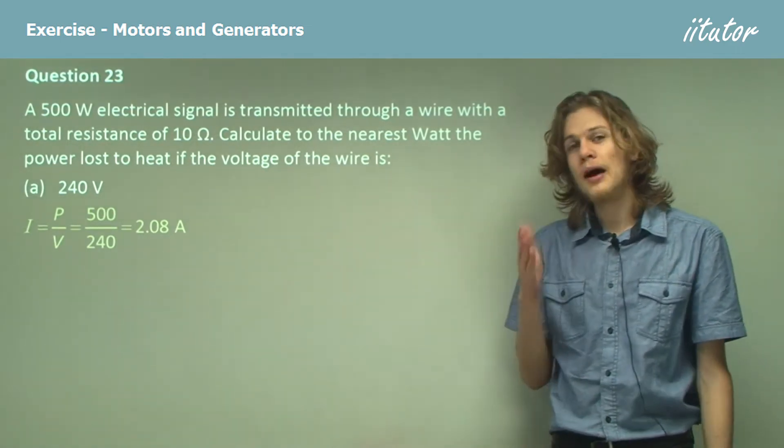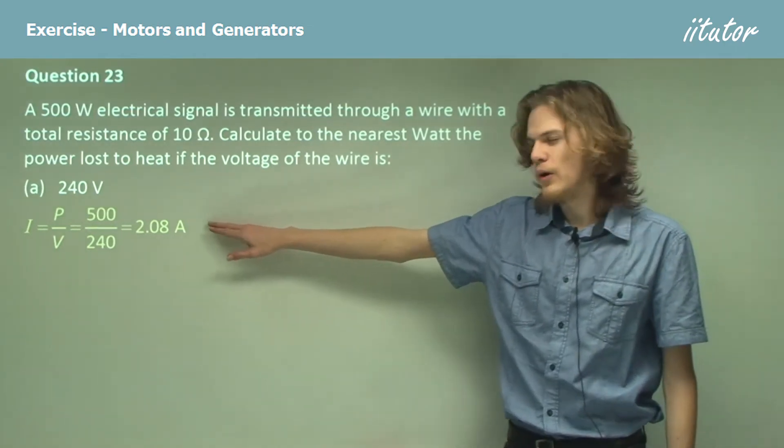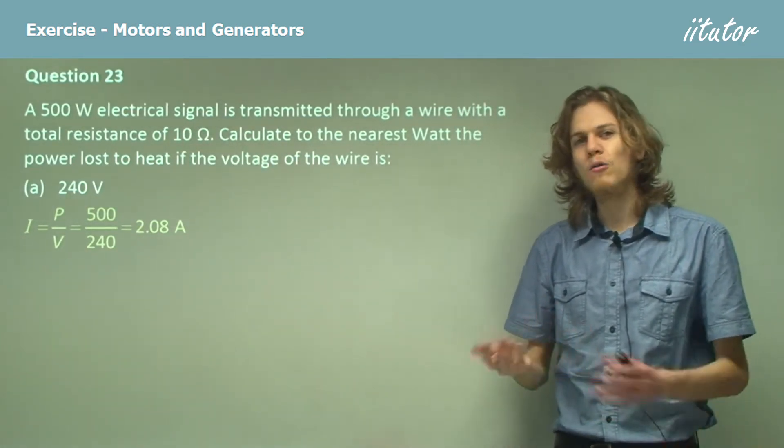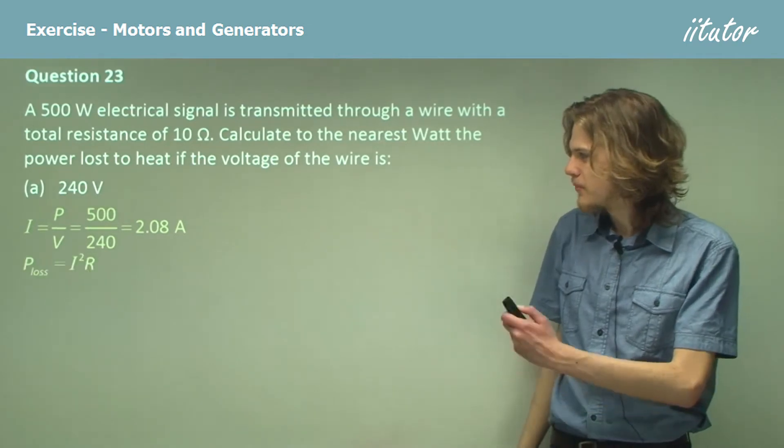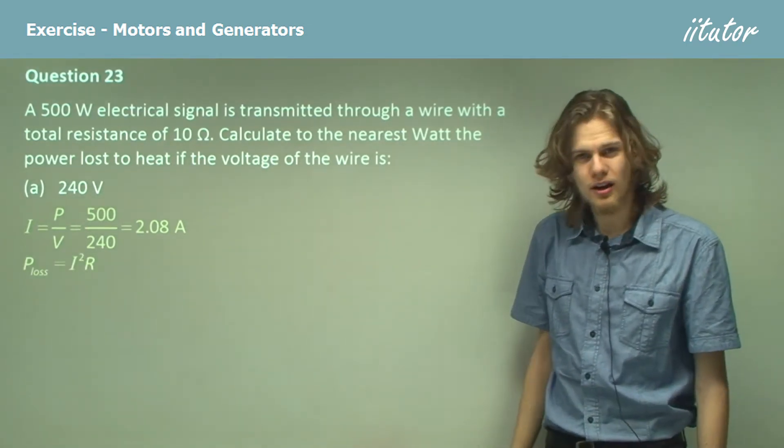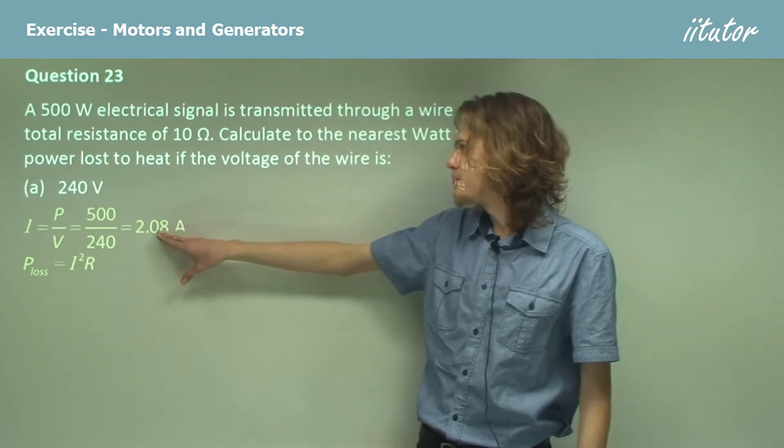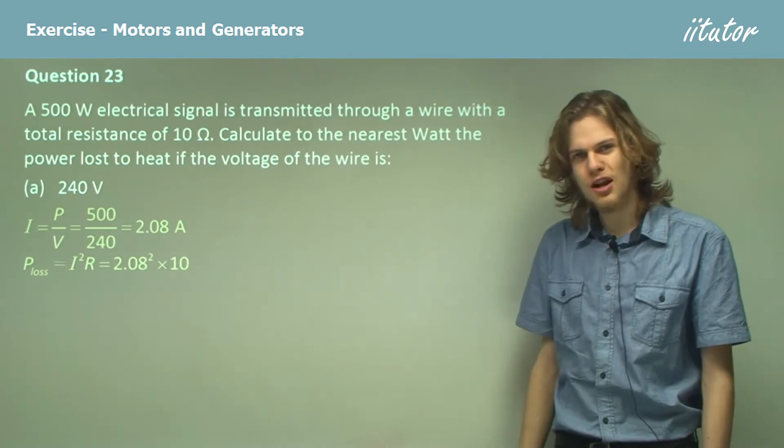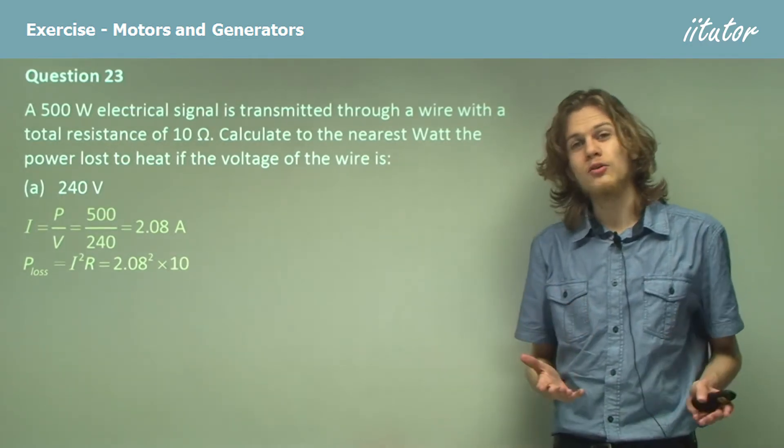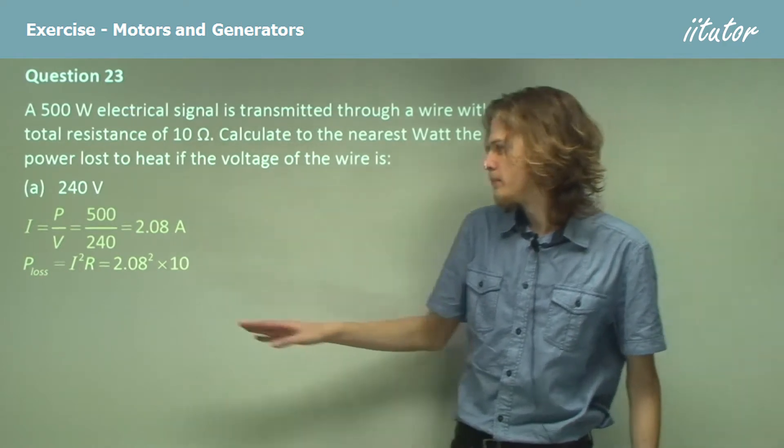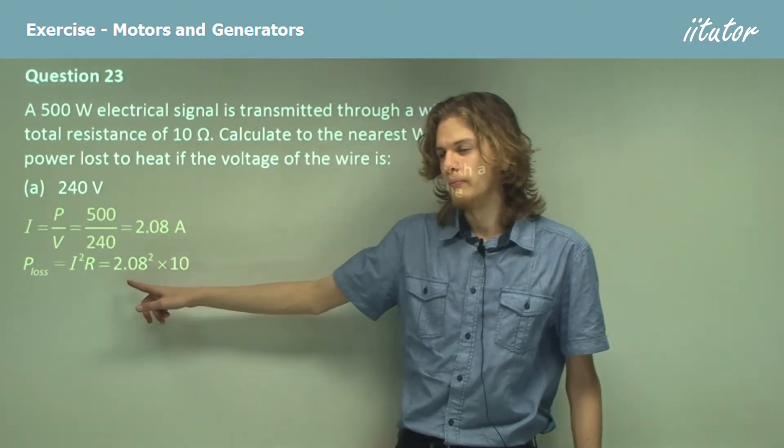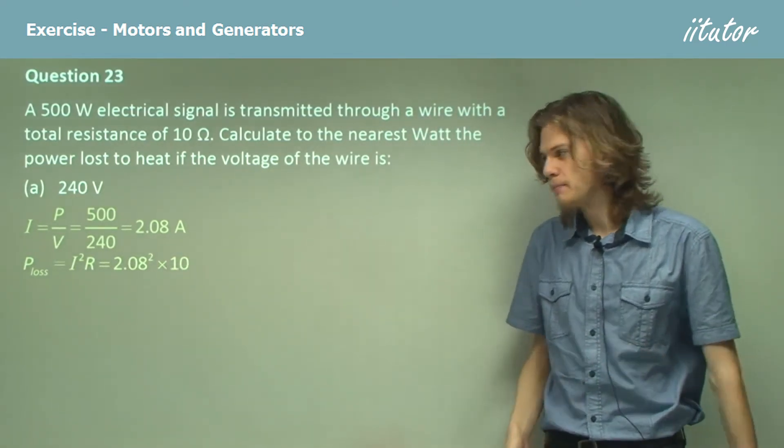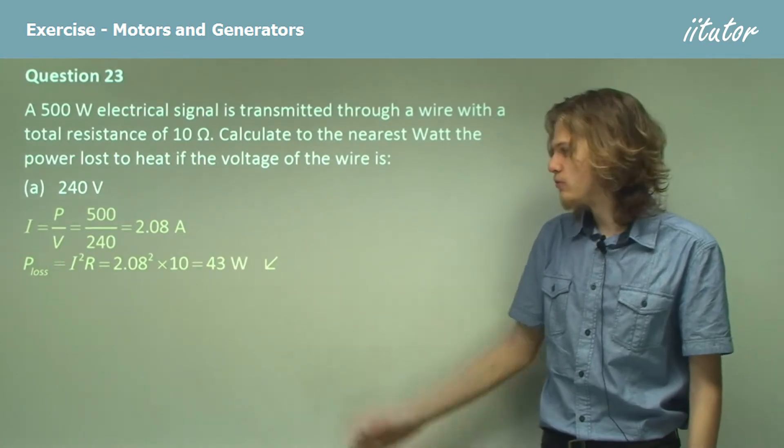Now to find the total power loss we need to apply this equation to the resistance and use our equation for power lost in a system. That's I squared R. So substituting in 2.08 and 10 ohms for R, we have 2.08 squared times 10. We can see it's going to be a little bit more than 4 for 2.08 squared times 10, so we should get a number that's around 40. In fact to the closest watt it's 43 watts.